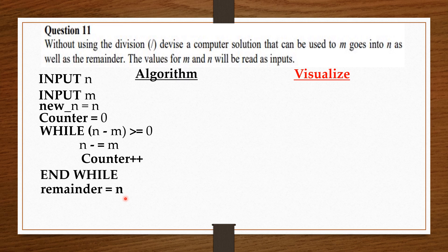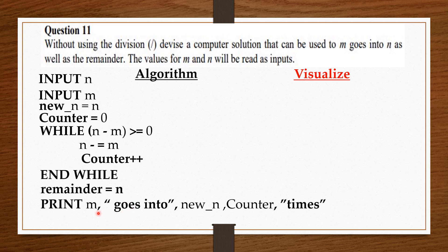Now, we can print. So, we say: print m goes into new_n counter times. m is the divisor and new_n is the dividend. Because the initial dividend n has been reduced to the remainder by the loop, that is why in the beginning we first saved a copy of n in new_n. So, new_n is now the dividend, and counter holds the number of times we subtracted m from n. Then from here, we can print our remainder as well.